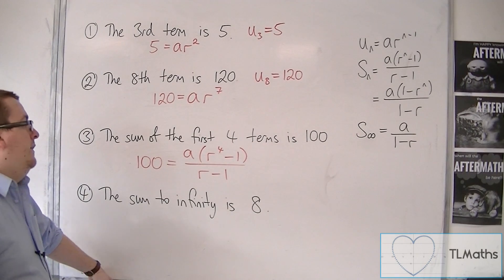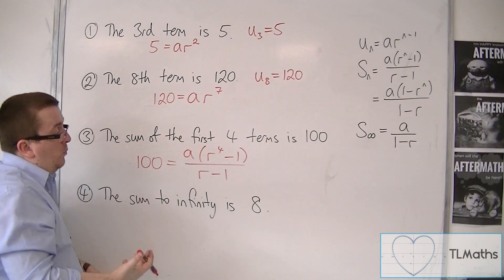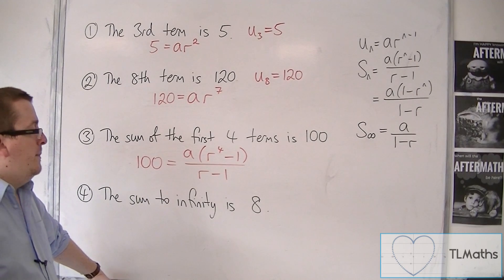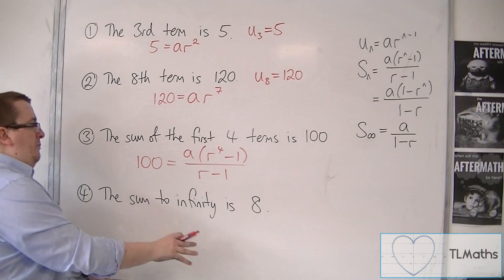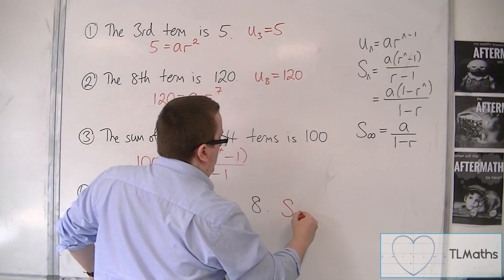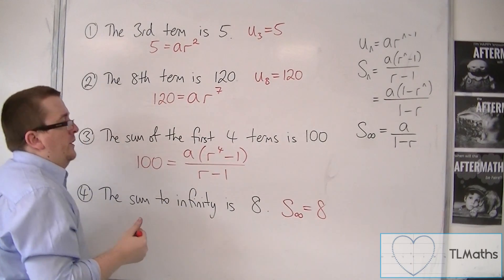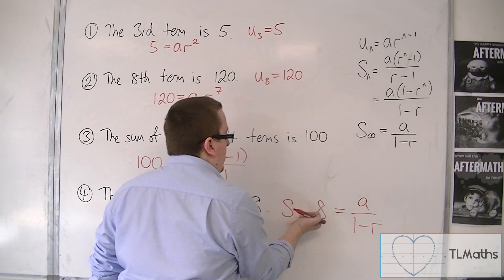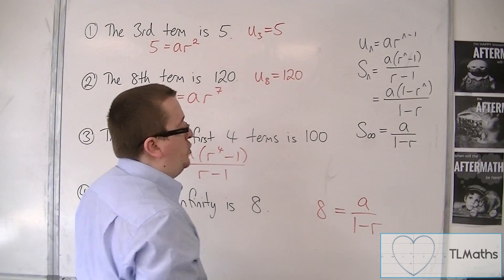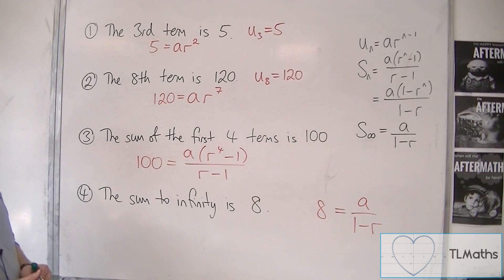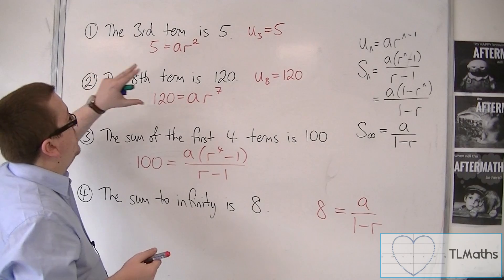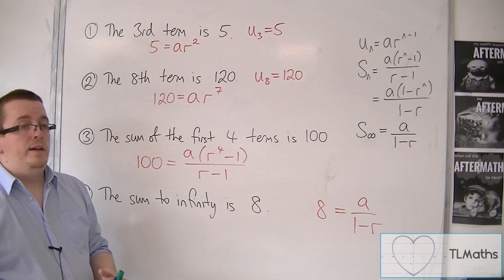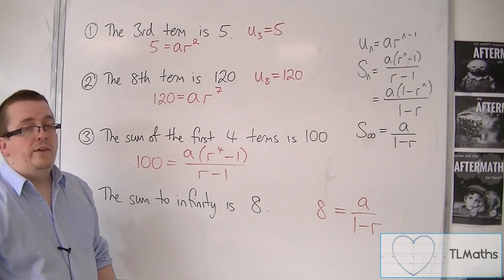It might be an idea to multiply both sides by r minus 1, but I would probably deem it unlikely that you would want to manipulate it that much. Then finally, the sum to infinity is 8. The sum to infinity we know is a over 1 minus r, so that means 8 equals a over 1 minus r. That is the equation we would work with. We could be given information about one particular term and the sum to infinity and then have to work out a and r. We're going to see a few examples of this in the coming videos.